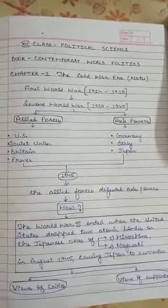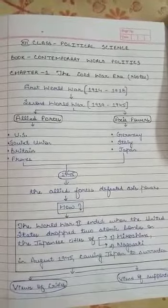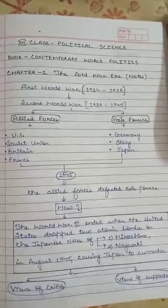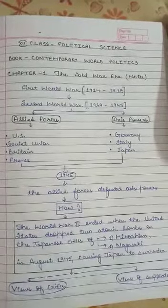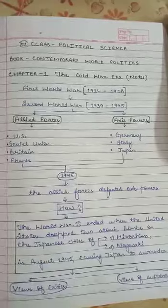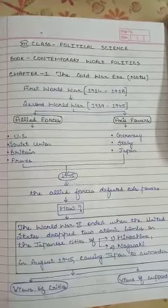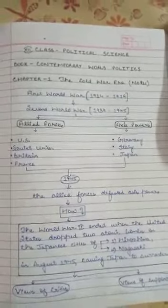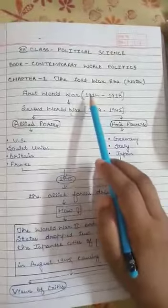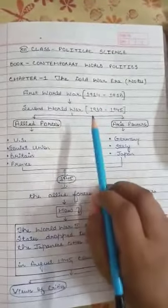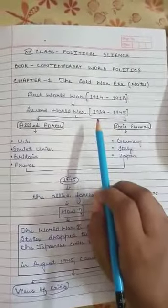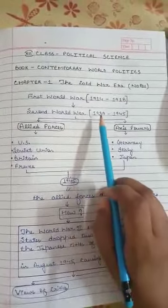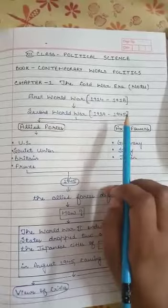In order to understand what is the Cold War, we first need to know what was the Second World War and how did it end. After the First World War, we had the Second World War which started from 1939 to 1945.